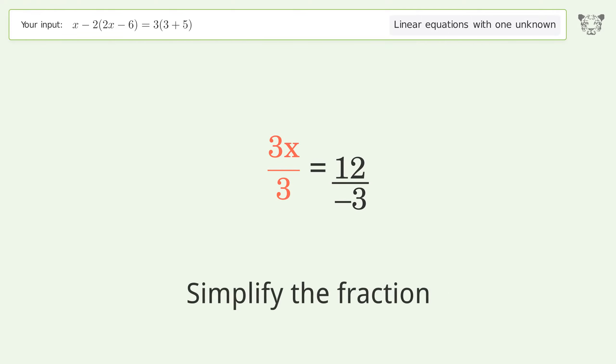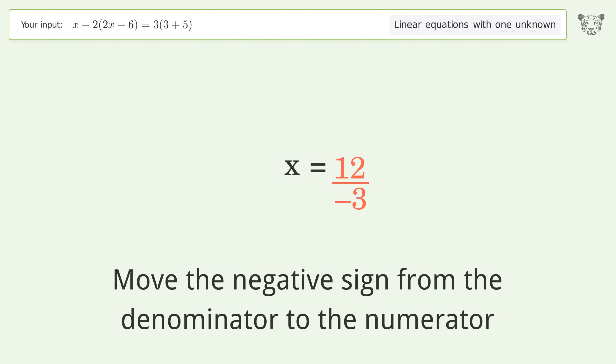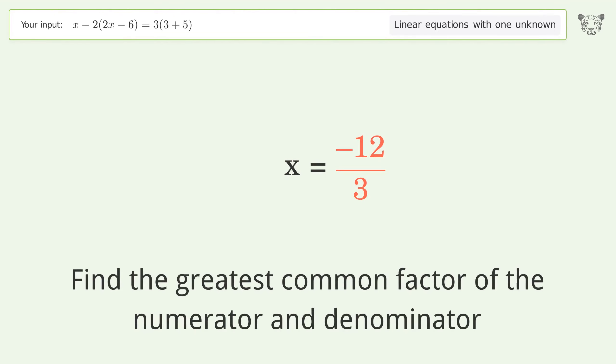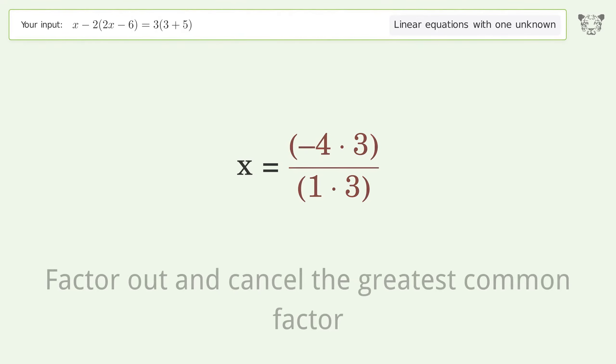Simplify the fraction. Move the negative sign from the denominator to the numerator. Find the greatest common factor of the numerator and denominator. Factor out and cancel the greatest common factor.